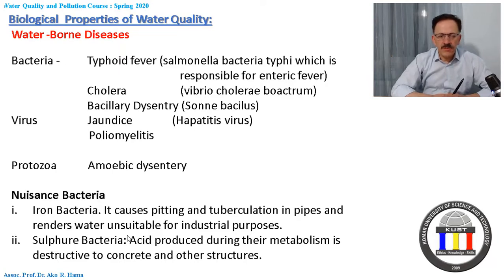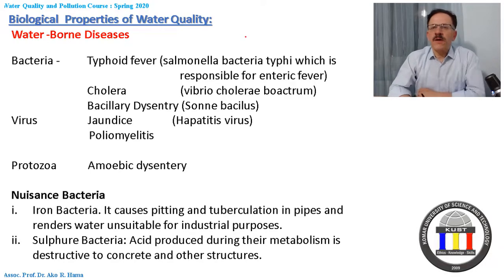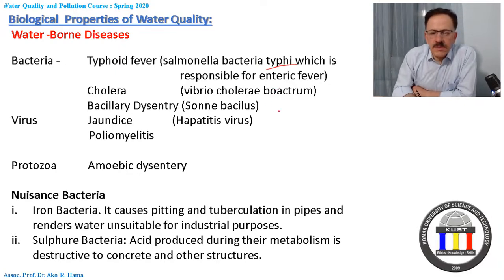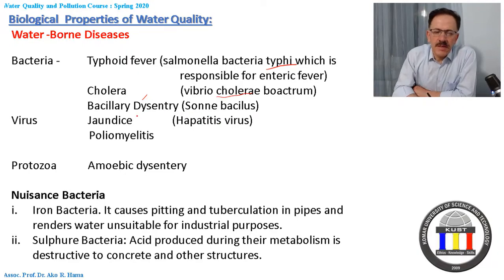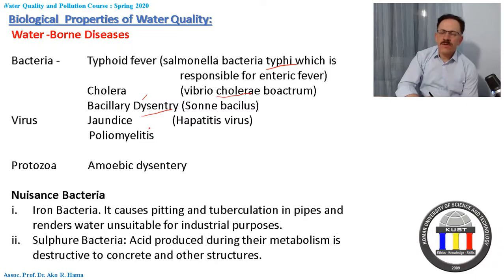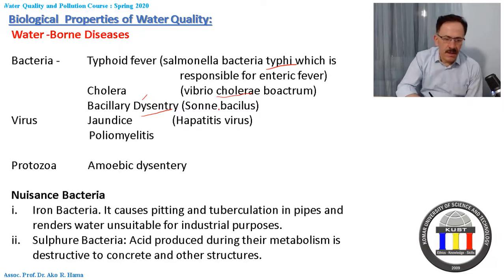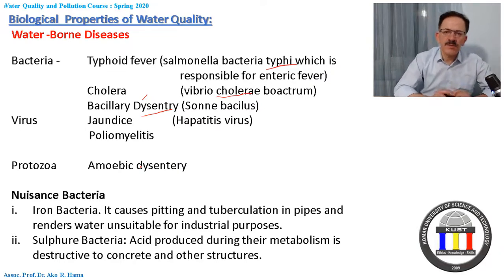For example, in the bacteria category — as you can see in this slide — we have Salmonella bacteria, which causes typhoid fever. We also have cholera, which is due to the cholera bacterium, and dysentery is another waterborne bacterial disease. Some diseases are due to viruses, like hepatitis viruses, and we also have protozoa, such as amoebic dysentery, which is another kind of microorganism.